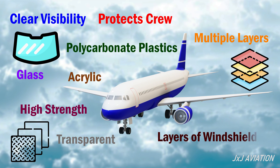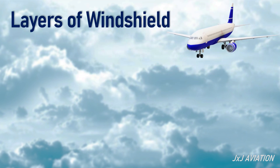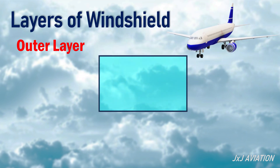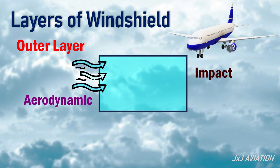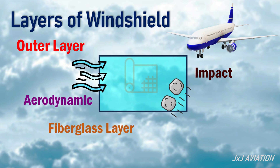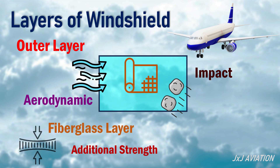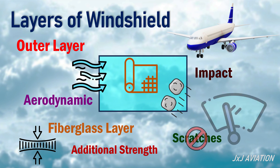Let's look at the different layers of a cockpit windshield in more detail. The outer layer is designed to withstand aerodynamic and impact forces. To withstand these forces, the glass may be coupled with a fiberglass layer for additional strength. This layer also prevents scratches that can be caused by the windshield wipers.